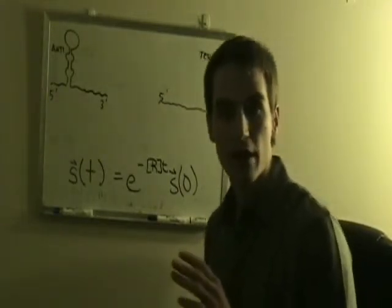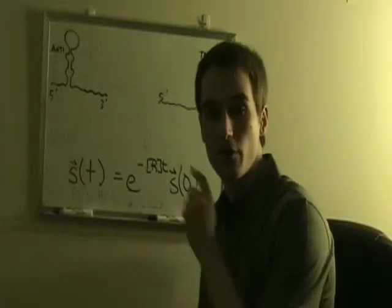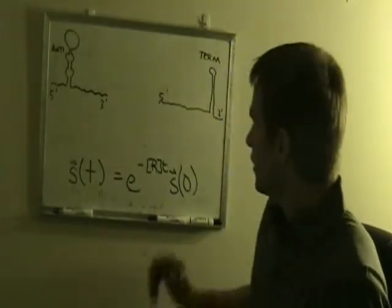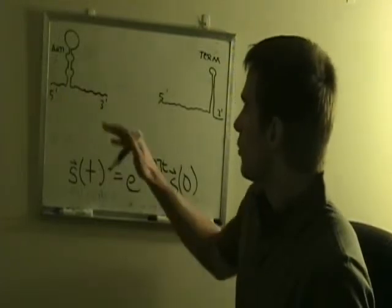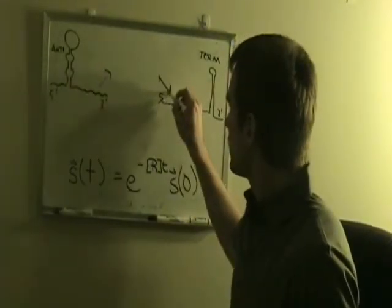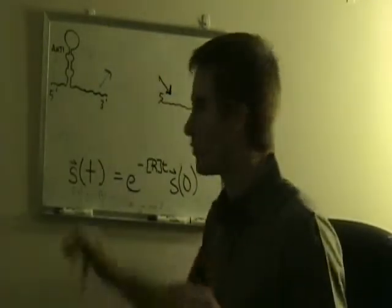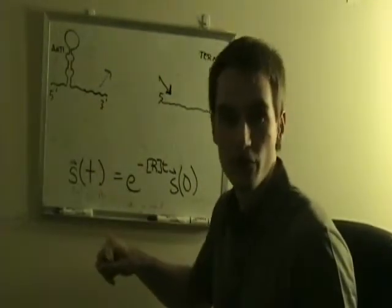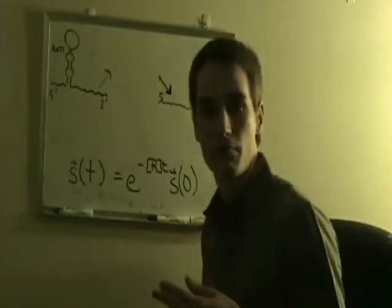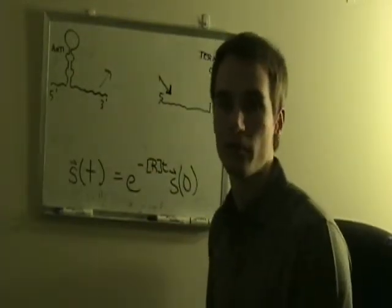In order to model the process of going from the anti-terminator to terminator, I decided to try to produce an analytic method. What I did, then, was propose this model. As the anti-terminator's nucleotides near the base dissociate, they're immediately allowed to bind into the terminator hairpin's conformation.